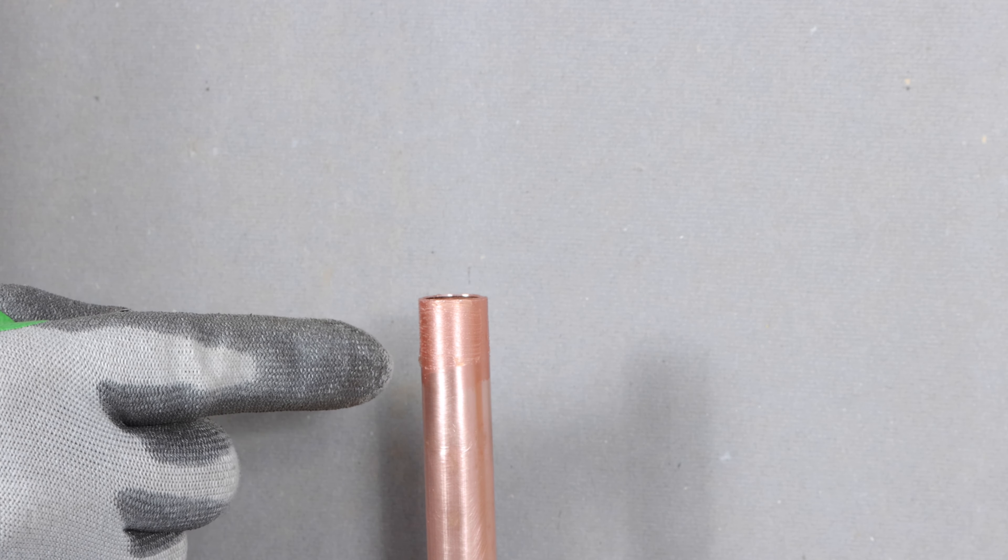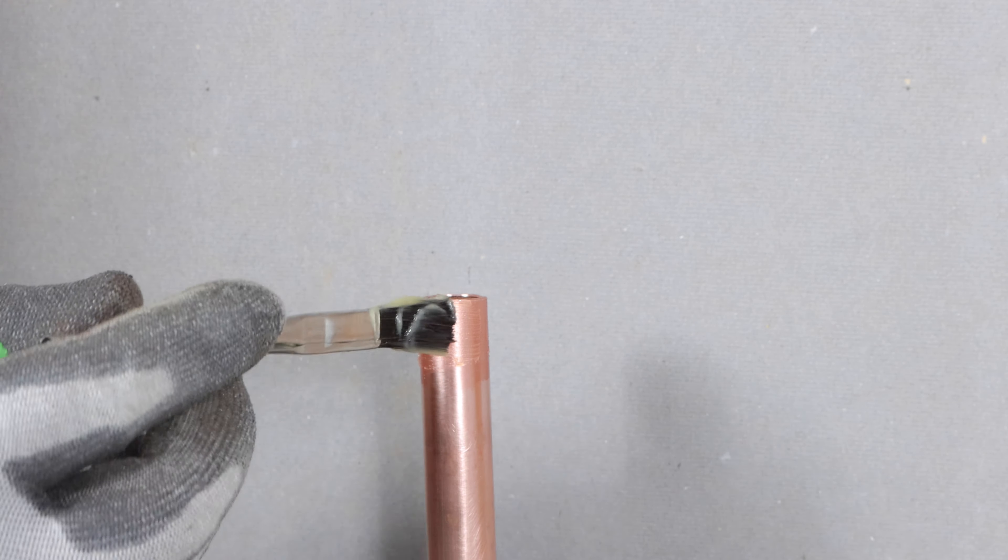So then what I do is apply a thin layer of that to the pipe. You don't need a ton of the flux. Just a little bit to make sure that it's on the pipe and the solder will flow upward.